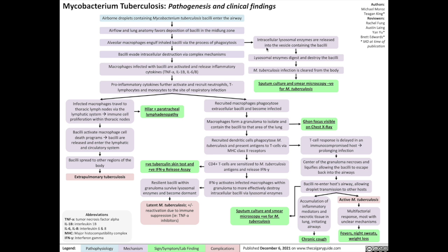After phagocytosis, intracellular lysosomal enzymes within the macrophages are released into the vesicle containing the bacilli. In one possible scenario, lysosomal enzymes digest and destroy the tuberculosis bacilli. Thus, M. tuberculosis infection is cleared from the body, meaning that sputum cultures and sputum smears on microscopy will be negative for M. tuberculosis bacilli.